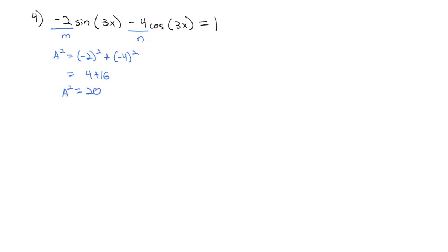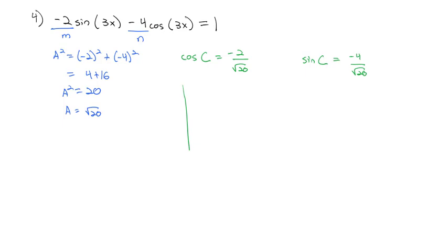We also know cos(c) = m/a = −2/√20 and sin(c) = n/a = −4/√20. That's not one of our key angles, so we'll use our calculator. On the unit circle, cosine is negative and sine is negative, meaning x is negative and y is negative — that puts us in the third quadrant.